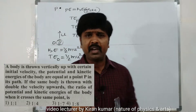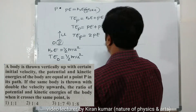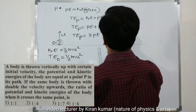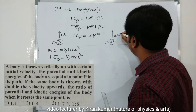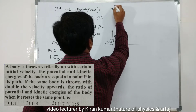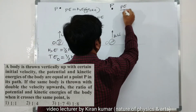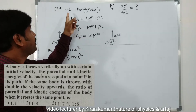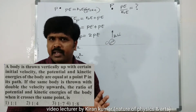For the second condition, the same body is projected from point O but now with initial velocity 2u in the upward direction. It reaches the same point P. We have to find the ratio of potential energy to kinetic energy at that point. In the first condition, PE equaled KE, but in the second condition we need to find PE to KE ratio.